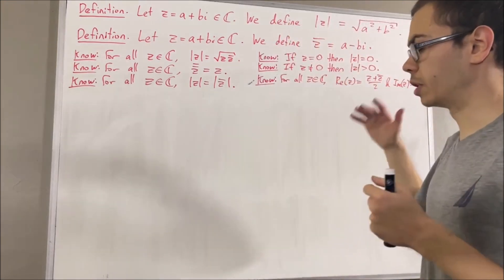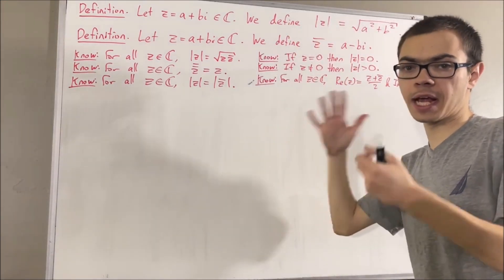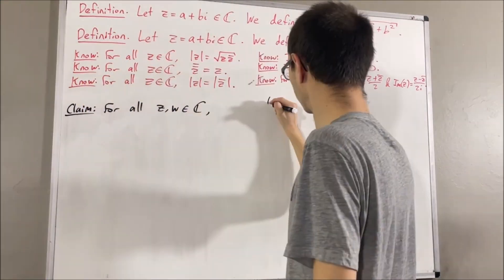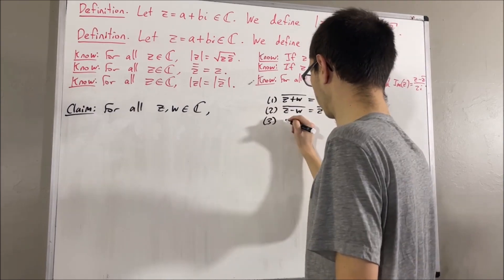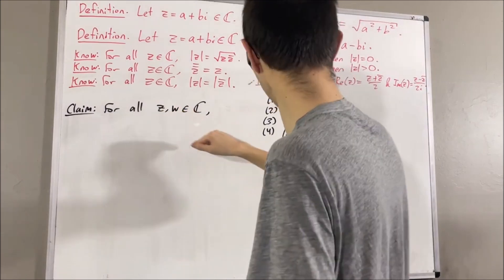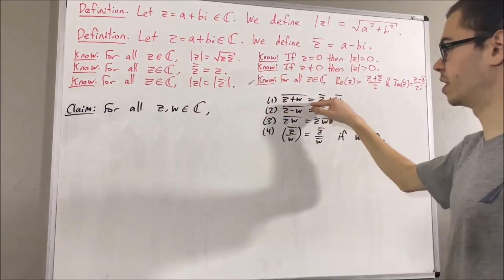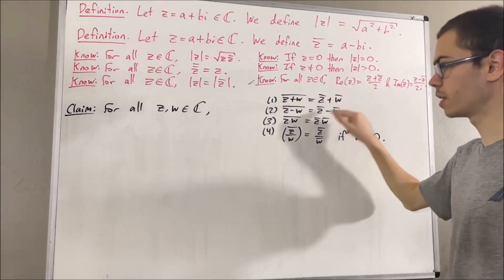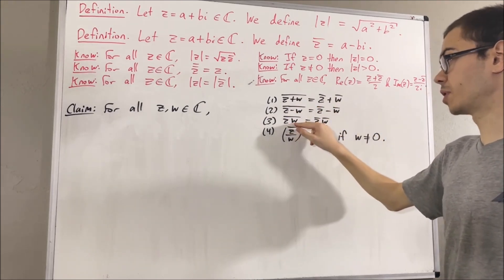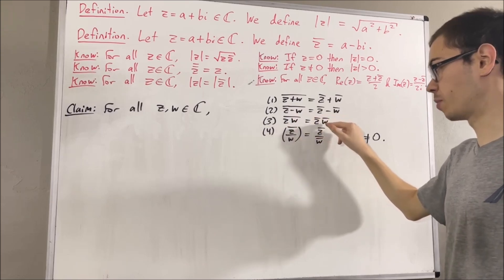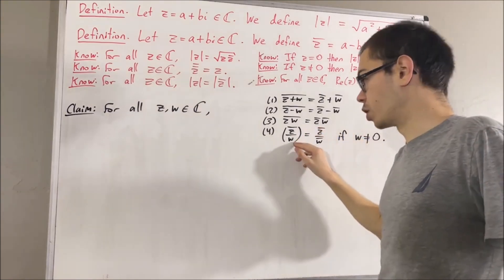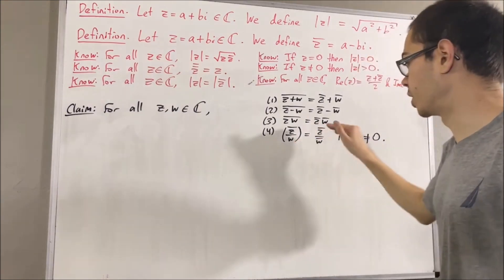Now we're going to prove the addition, subtraction, multiplication, and division rules for the complex conjugate. For all complex numbers z and w: z plus w bar equals z bar plus w bar; z minus w bar equals z bar minus w bar; z times w bar equals z bar times w bar; and if w is not equal to zero, then z over w bar equals z bar over w bar.